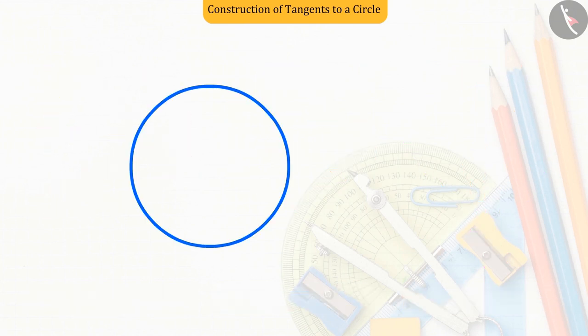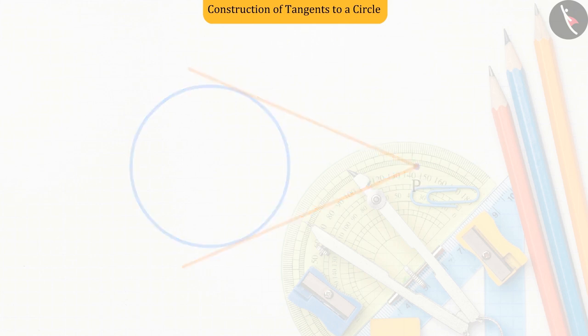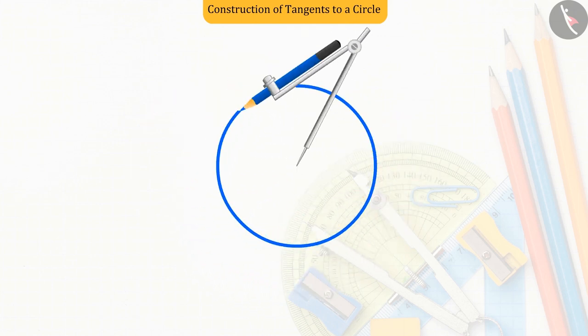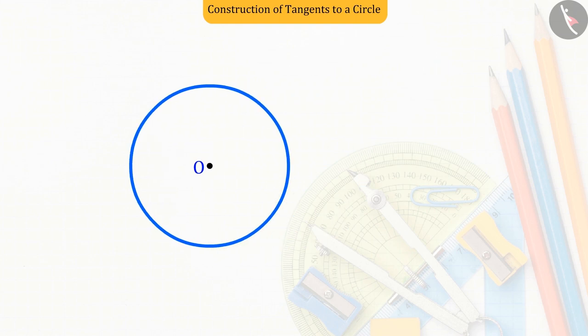Let us now see how tangents can be drawn on a circle from a point outside the circle. A circle whose center is O, let the point outside be T. Tangents are to be drawn on the circle.